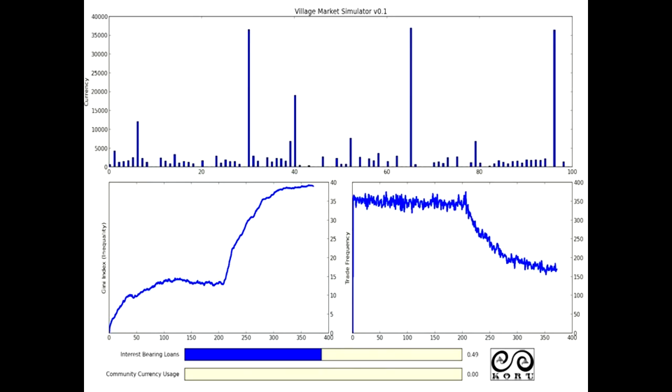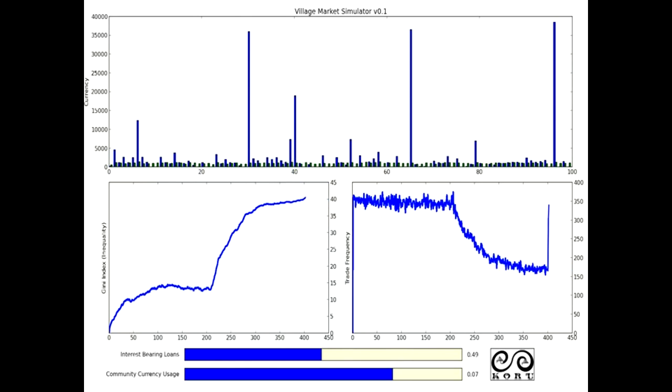Let's look at the simulation again and see what would happen when you introduce that type of currency. Here we haven't introduced it yet. And all of a sudden here we have, now you can see a little tiny green speck next to people's balances that represents their what we call a community currency.